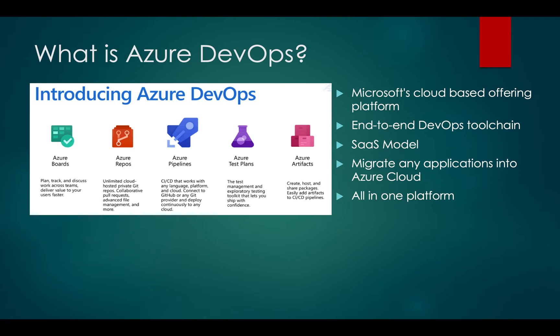Next is Azure Repos, which is for setting up your source code management. You don't have to use Bitbucket, GitHub, or GitLab — you can set up your application code entirely in Azure Repos. There is also Azure Pipelines, similar to Jenkins or other continuous integration tools.